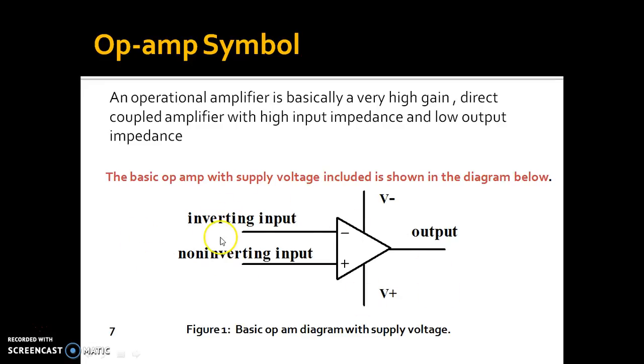This is the basic symbol of operational amplifier. Here you can see it has two input terminals. One is called inverting input terminal with a negative sign and another is called non-inverting input terminal with a positive sign. Two supply voltages, V negative and V positive, and one output voltage terminal.